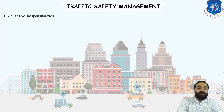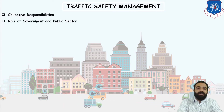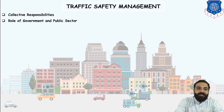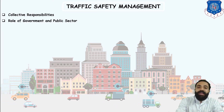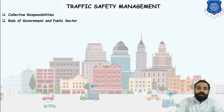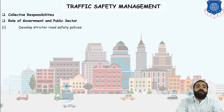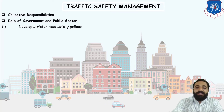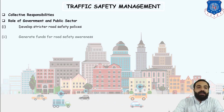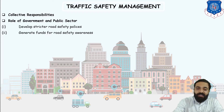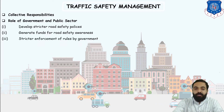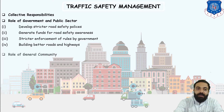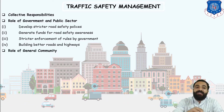There is a production responsibility of the government to take action against those who break the rules. The role of government and public sector includes: developing stricter road safety policies, generating funds for road safety awareness, stricter enforcement of rules by the government, and building better roads and highways.